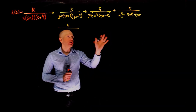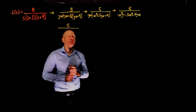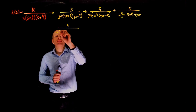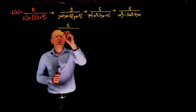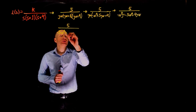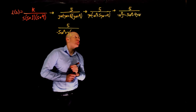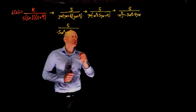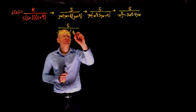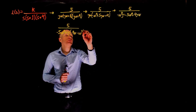We can now identify the real and imaginary parts of the denominator. The real part is negative 5 omega squared. And the imaginary part is 4 omega minus omega to the power of 3.